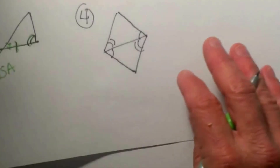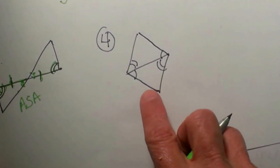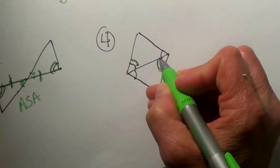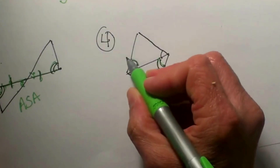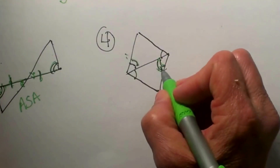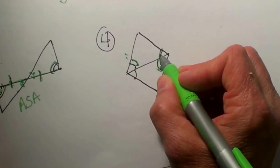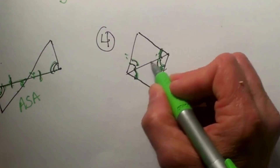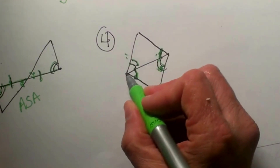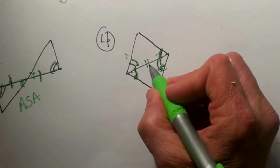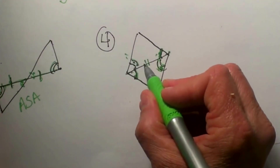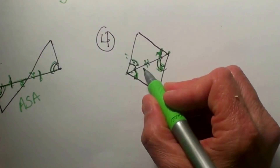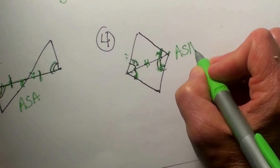In the fourth example, we have two pairs of congruent angles. There is an angle up here and a matching one on the other side, marked the same — those are two corresponding angles. Then we have an angle with one arc and another angle with one arc. They share a common side right down the middle. So angle, side, angle matches angle, side, angle — this one is also an angle side angle proof.